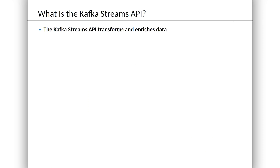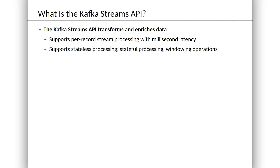The Streams API is a system for transforming and enriching these streams of data. It supports per-record stream processing — there is no micro-batching going on here at all. Every record that comes into a stream is processed and considered on its own, and that can get you to millisecond latency in a system that's tuned well. As we dig into the API, there are stateless transformations — things like filtering and mapping — and there are stateful transformations — things like joins and aggregations.